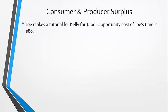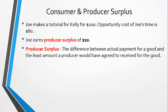Let's imagine Joe is a freelance teacher. He makes a tutorial for Kelly, who buys it for $100. Joe could otherwise be earning $80 with the same time, so he's happy, and he earns a producer surplus of $20 for making the tutorial. Producer surplus is the difference between what a producer receives for the good or service and what he was willing to sell it for.